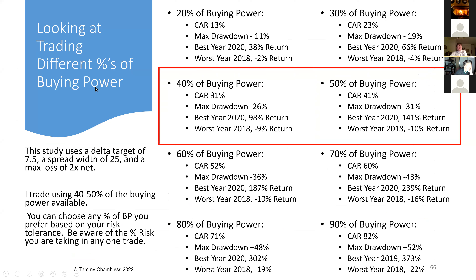Finally, looking at different buying powers: of course, the more buying power you use, the greater your returns are going to be, but your drawdowns will also be higher. I usually don't recommend trading more than 40 to 50% of your buying power — I tend to be more in the 40% range. You can have great returns if you're willing to risk more, but risk and reward are very much on either side of the balance.